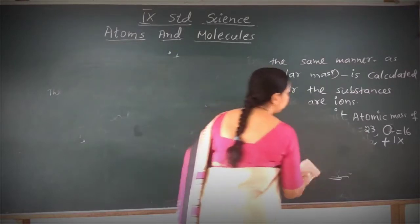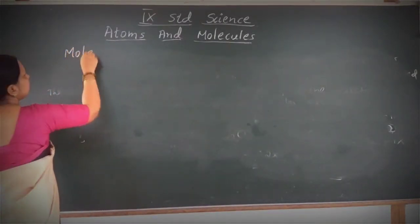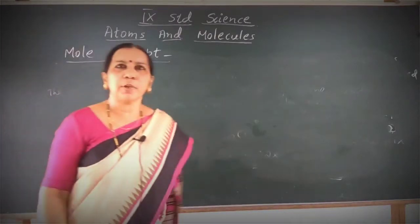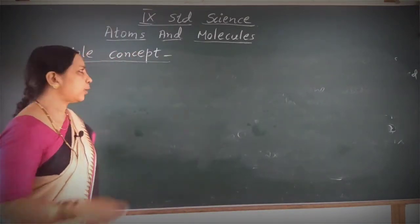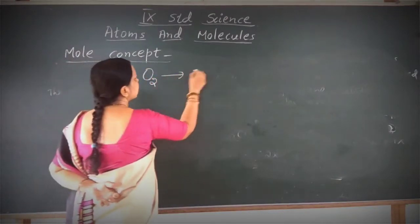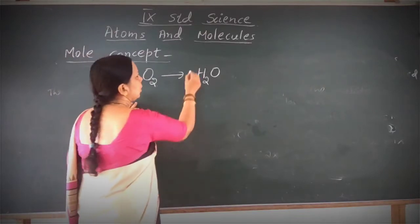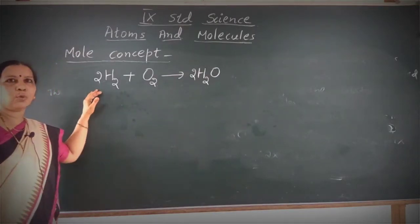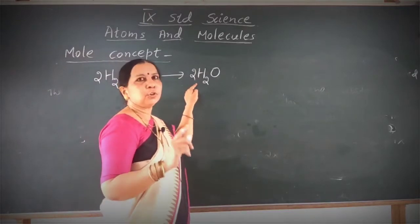Mole concept. Let us consider a chemical equation. Look at this chemical equation of formation of water. You know which elements combine to form a water molecule — hydrogen and oxygen combine to form water. The equation is: 2H₂ + O₂ → 2H₂O. What does this chemical equation indicate? Two molecules of hydrogen combine with one molecule of oxygen to give two molecules of water.